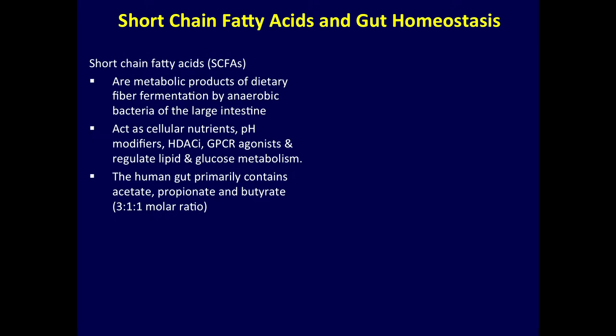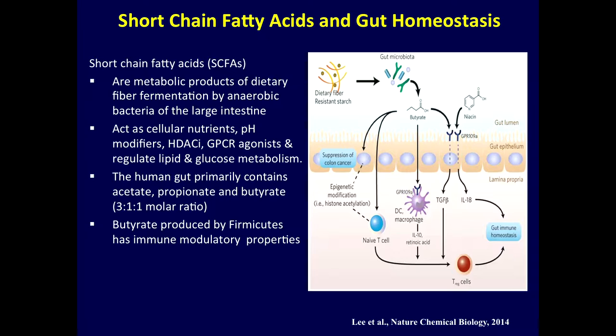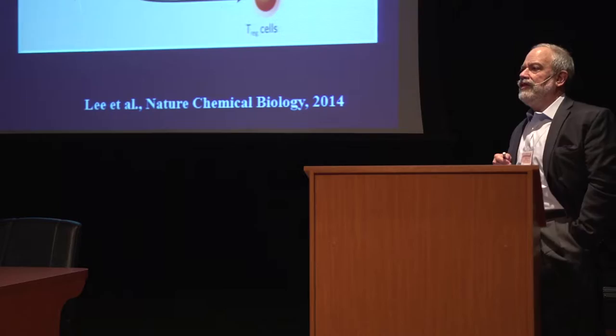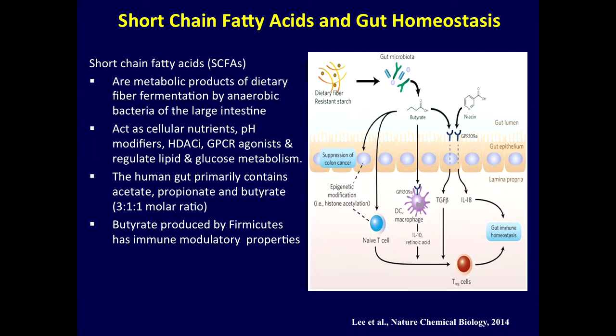The human gut contains acetate, propionate, and butyrate as the three major short-chain fatty acids. Butyrate is probably the most important in terms of its immune regulatory properties. Dietary fiber drives the microbiome to make butyrate. The major receptor for butyrate is the GPCR109A receptor, found on your epithelial cells and also on your immune cells, so it can have an effect on the gut epithelium. The epithelial surface in the gut is also immunologically active — cytokines, antimicrobial peptides, and other factors can be made by the epithelium, which is in direct contact with the host microbiome.